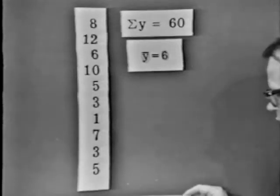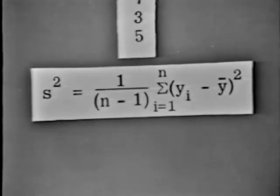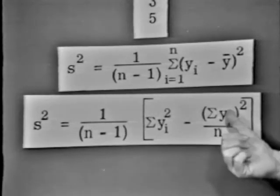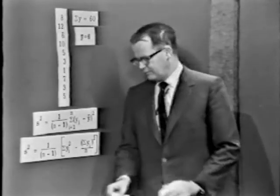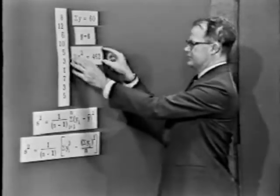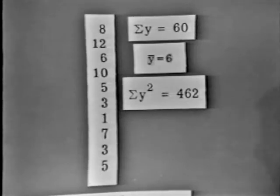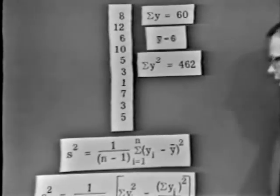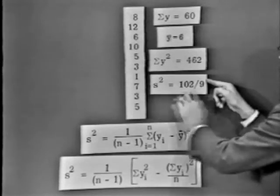Now we have the problem of estimating the variance. You'll recall there are two equations we could use in this case. Take the sum of squares of deviations from their average and divide by degrees of freedom, n minus 1 in this instance, or we could take the alternative and equivalent formula: get the crude sum of squares, the correction factor, and divide by degrees of freedom. I'm going to use the second form. The crude sum of squares is 462, so we have 462 minus 60 squared over 10. That gives us 102, and there will be 9 degrees of freedom. So the estimate of the variance would be 102 over 9.